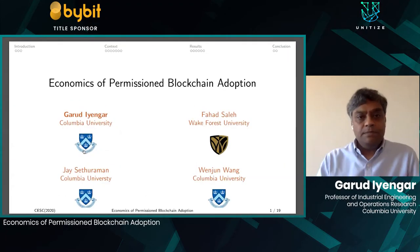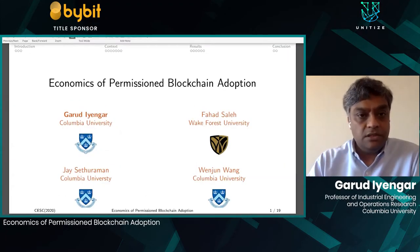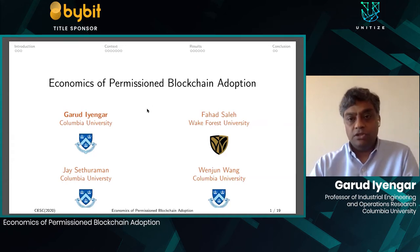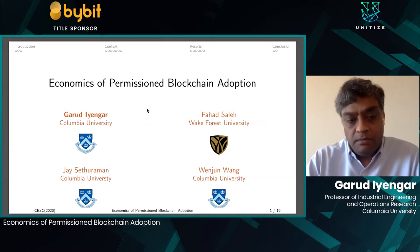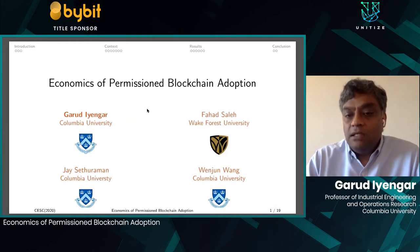What I'm going to be talking about today is a step in that direction: a simple model to understand why permissioned blockchains — not permissionless, but permissioned blockchains — are not getting adopted and identify the reasons why they're not getting adopted, and try to see if there are ways that we can mitigate them. The paper I'm presenting today is called 'Economics of Permission Blockchain Adoption.' This is joint work with my colleague at Columbia, Jay Sethuraman, our joint PhD student Benjen Vang, and a collaborator from Wake Forest University, Fahad Saleh.